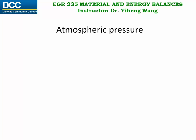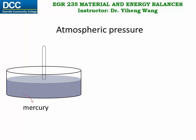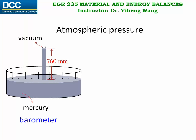You have probably done this experiment in class before. Take a reservoir of mercury and insert a test tube into it. Make sure inside the test tube is vacuum. Because of the atmospheric pressure, mercury would rise up inside the test tube. And when it stops rising, the total height would be about 760 mm. This device is a simple barometer, and we can use the equation we just derived to determine the atmospheric pressure at the bottom of the test tube. Since inside the test tube there's vacuum, P zero is zero.